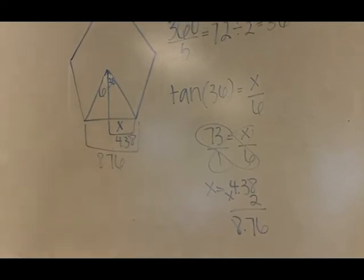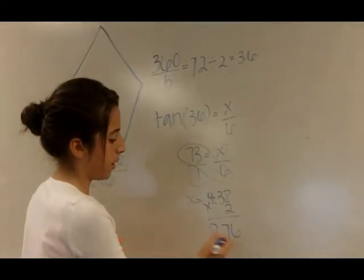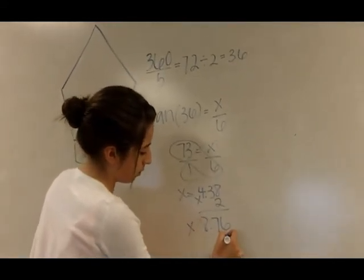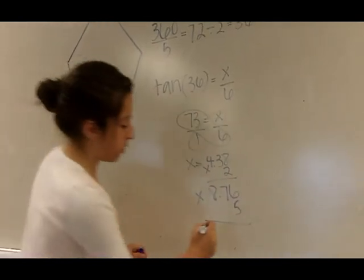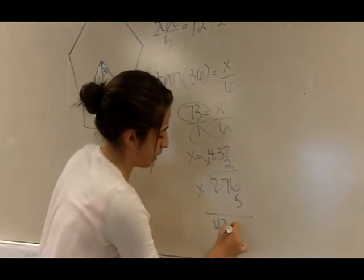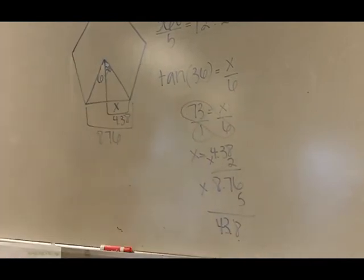And to find the whole perimeter of the pentagon, you have to multiply it by how many sides there are. So it's times 5, and that equals 43.8.